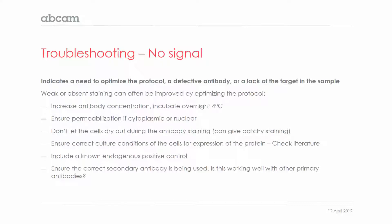If you have no signal, this indicates a need to optimise the protocol. You might have a defective antibody, or there may be a lack of target in the sample, and you could check that with a literature search to see how much target should be there. We would recommend increasing the antibody concentration and making sure you incubate overnight at four degrees. Increasing that concentration should mean that you increase the amount of staining.